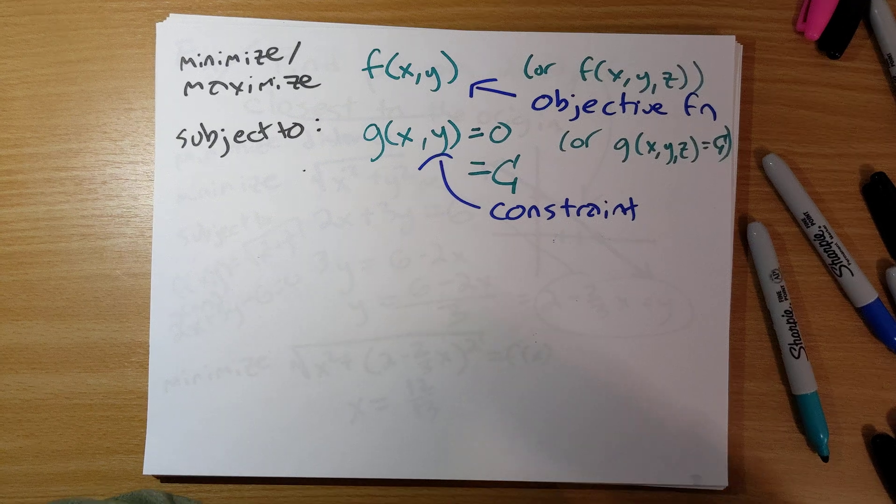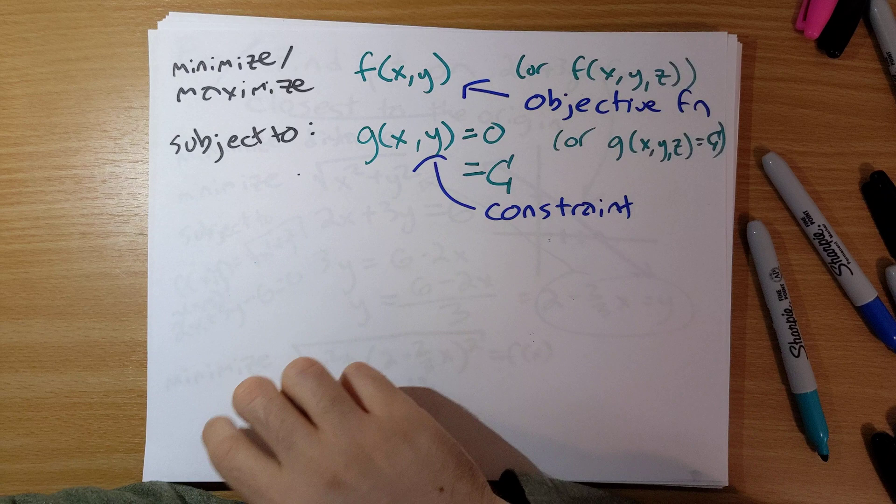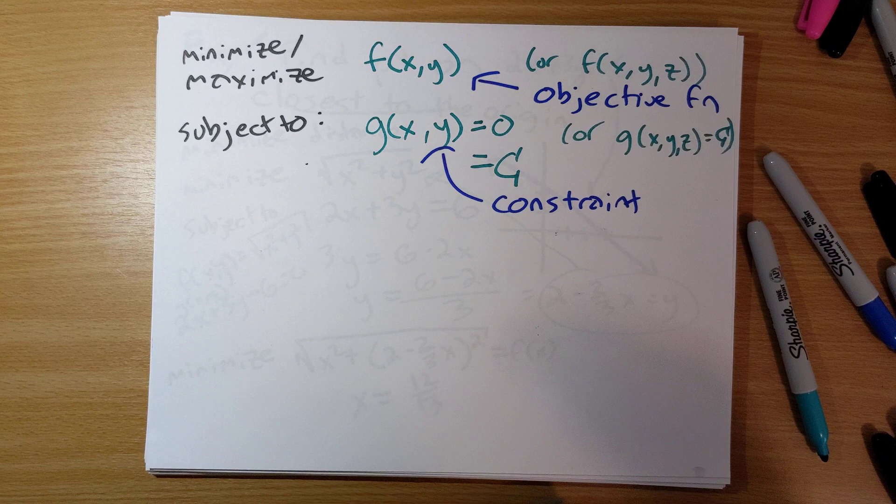In the last video, we talked about the goals of this section. We want to minimize or maximize some function f of x, y, or f of x, y, z, subject to constraints g of x, y, or g of x, y, z equal to 0, or some constant that we rearrange.